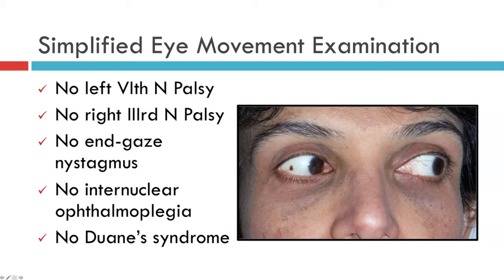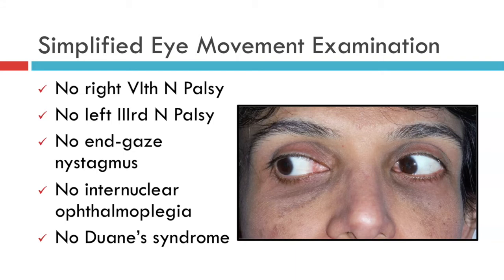We can also tell there is no Duane's syndrome, a congenital cranial disinnovation disorder which results in an absence of abduction of one eye. Similarly, when the patient looks to the right, we can confirm there is no right sixth nerve palsy, no left third nerve palsy, no end-gaze nystagmus, no internuclear ophthalmoplegia, and no Duane's syndrome restricting abduction of the right eye.